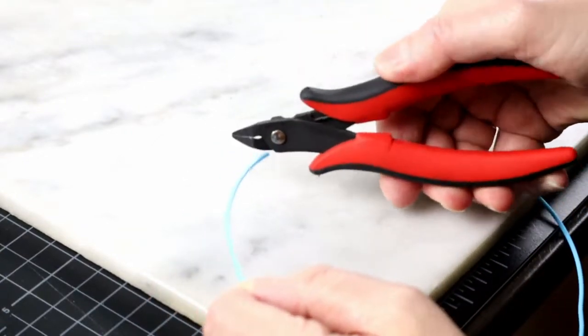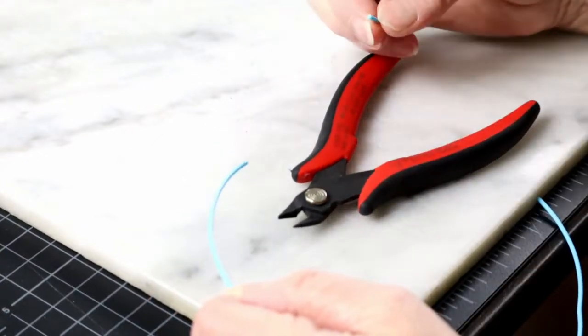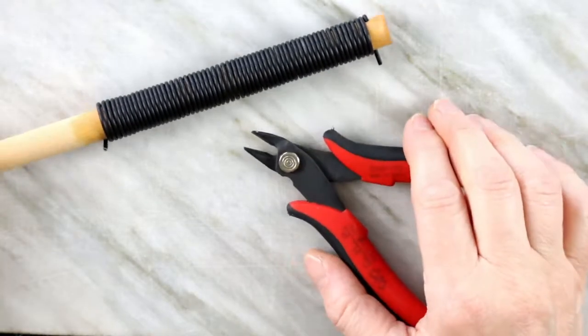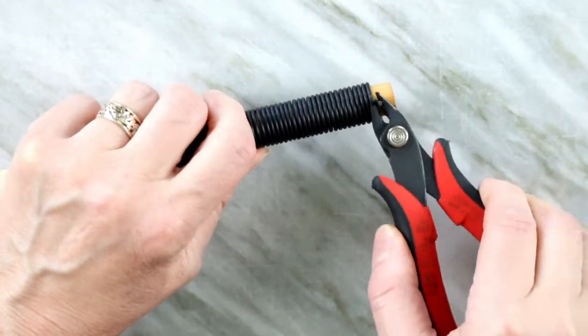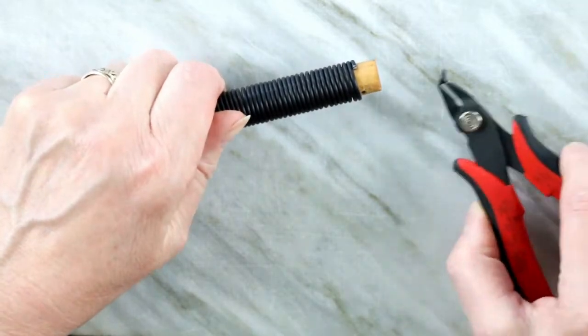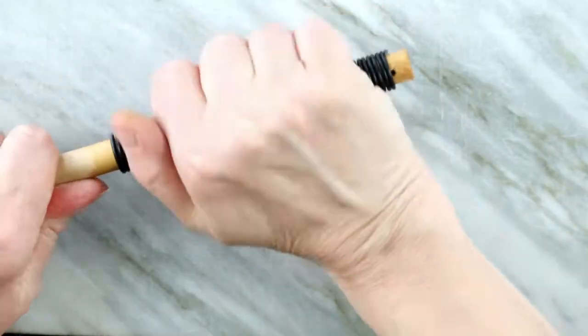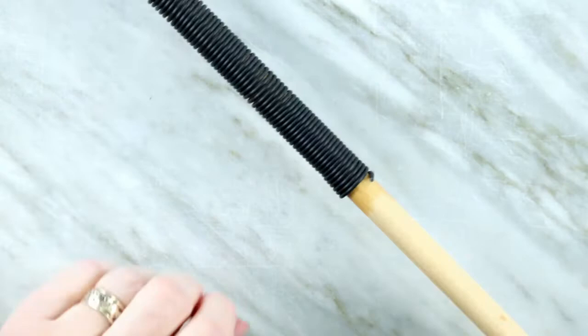Next tool we will need are flush cutting pliers that produce good straight cuts. It can be a bit of work to get the coils off the dowel.